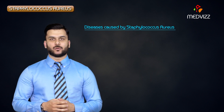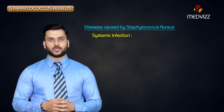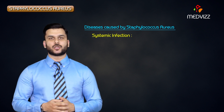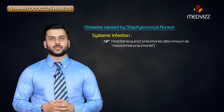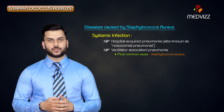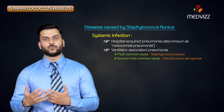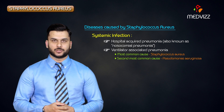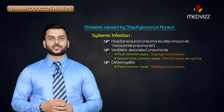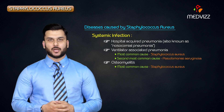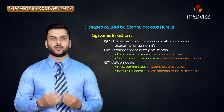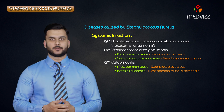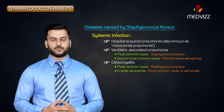What are the diseases caused by Staphylococcus aureus? First, it causes hospital-acquired pneumonia, also called nosocomial pneumonia, and it is the most common cause for ventilator-associated pneumonia — the second most common cause being Pseudomonas aeruginosa. It is also the most common cause of osteomyelitis, but keep in mind that in sickle cell patients, the most common cause of osteomyelitis is Salmonella, not Staph aureus.